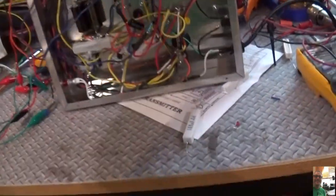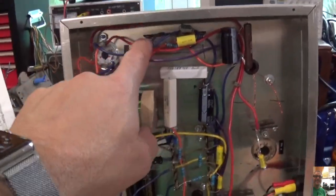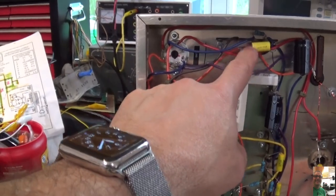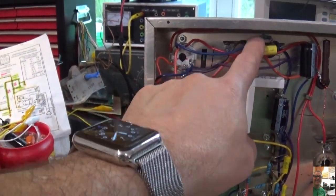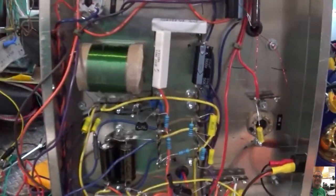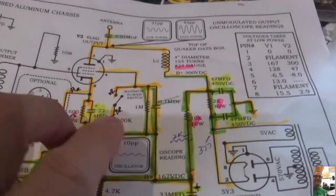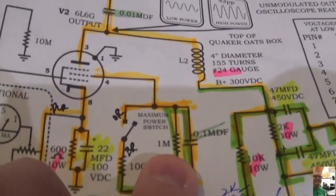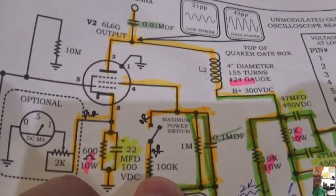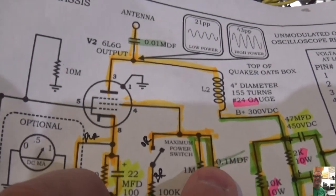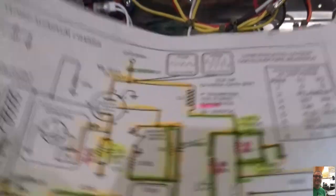What do I mean by that? I'll give you a great example. If you look right here, which is the components that go to the power switch. Let me show you this right here. Here's the power switch. So you've got a 1 meg resistor, a 100k resistor, and a 0.1 microfarad cap.